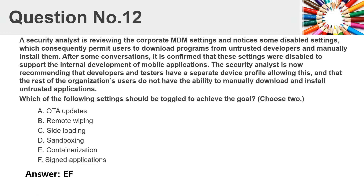Question 12: A security analyst is reviewing the corporate MDM settings and notices some disabled settings, which consequently permit users to download programs from untrusted developers and manually install them. After some conversations, it is confirmed these settings were disabled to support internal development of mobile applications. The security analyst recommends developers and testers have a separate device profile allowing this, while the rest of the organization's users do not have the ability to manually download and install untrusted applications. Which of the following settings should be toggled to achieve the goal? Choose two.